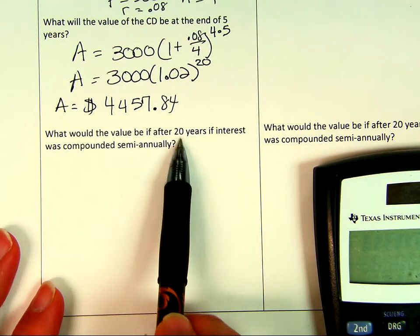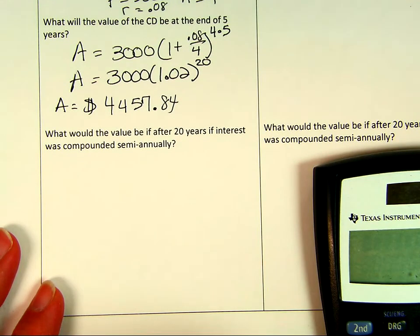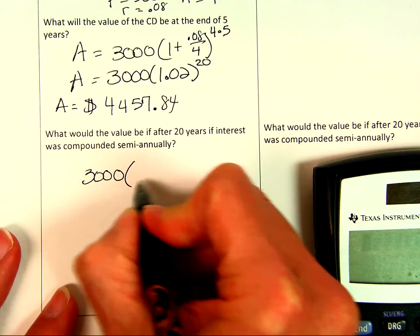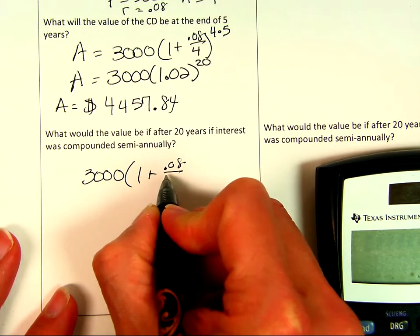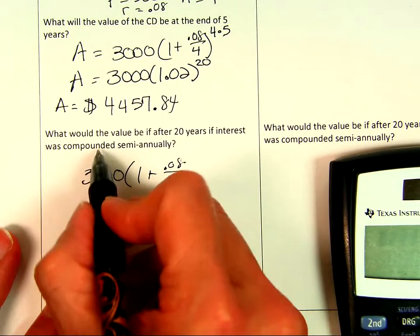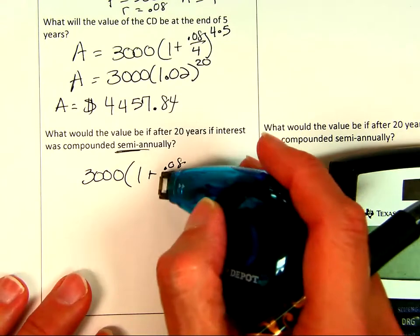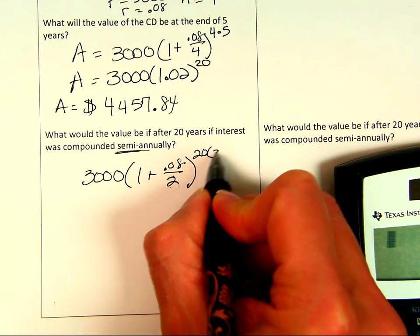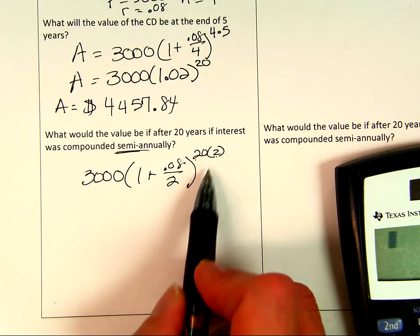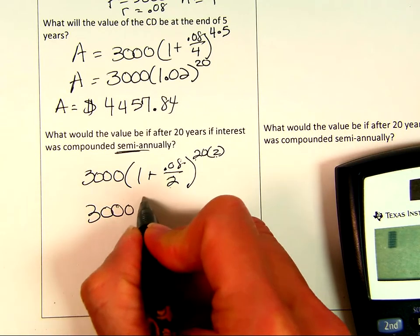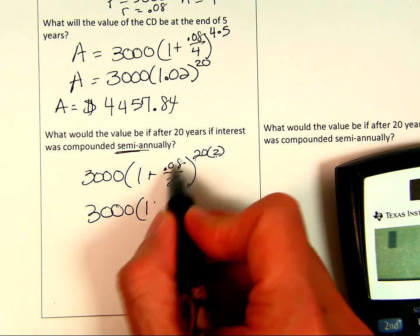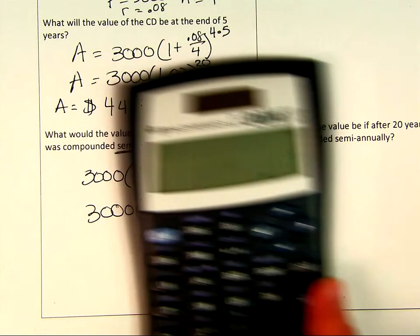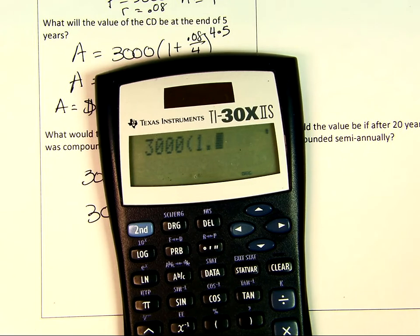What would the value be after 20 years? I can do the same thing, but what would change? It's semi-annually now, so I have to divide it by 2 instead of 4. And it's going to be for 20 years, so 20 times 2 is 40. So now I'm going to get 3,000(1.04)^40, because 0.08 divided by 2 is 0.04. We're going to put that in the calculator: 3,000 times 1.04 to the power of 40.